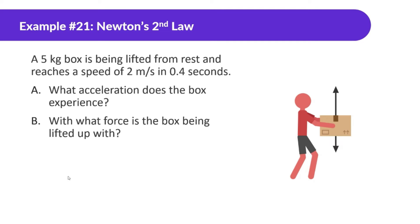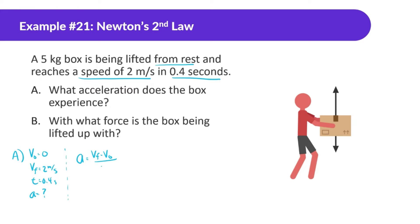A 5-kilogram box is being lifted from rest and reaches a speed of 2 meters per second in 0.4 seconds. What acceleration does the box experience? It starts from rest, so initial velocity is zero. Final velocity is 2 meters per second, and time is 0.4 seconds. Using kinematics: acceleration equals final velocity minus initial velocity divided by time — 2 minus 0 divided by 0.4 — gives us 5 meters per second squared.